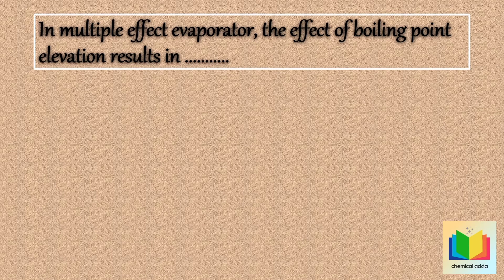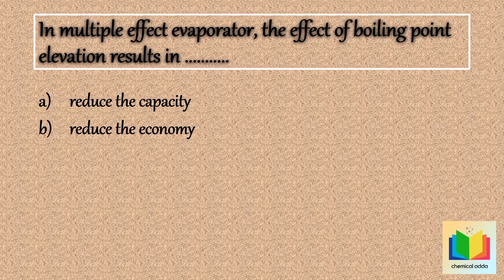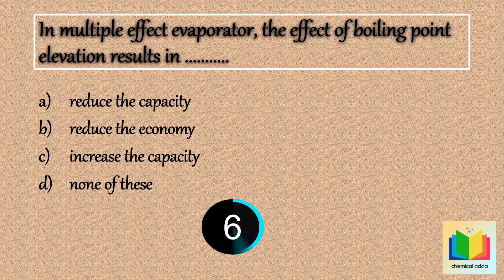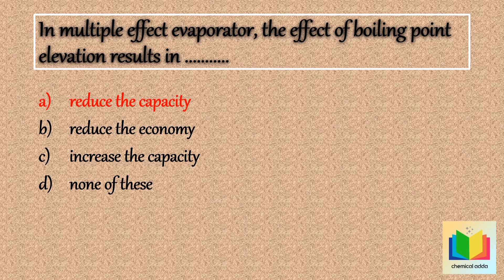The effect of boiling point elevation in an evaporator results in: options are option A, reduce the capacity; option B, reduce the economy; option C, increase the capacity; option D, none of these. So answer is option A, reduce the capacity.